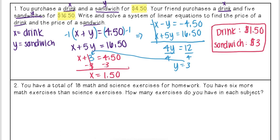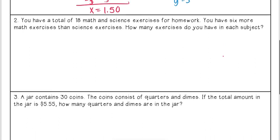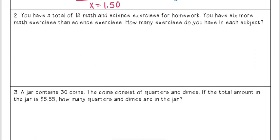Okay, let's go ahead and look at this next one. Here it says you have a total of 18 math and science exercises for homework. You have six more math exercises than science exercises. How many exercises do you have in each subject? So I want to find how many exercises I have in each subject. I'm just going to allow x to be my math and y to be my science.